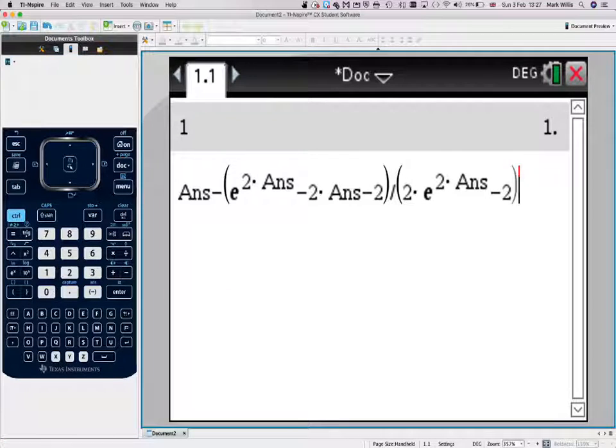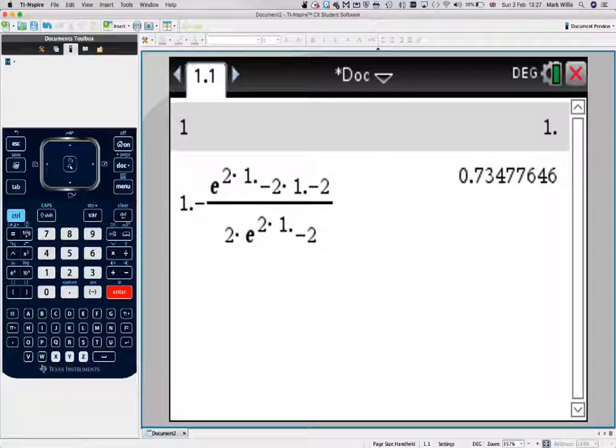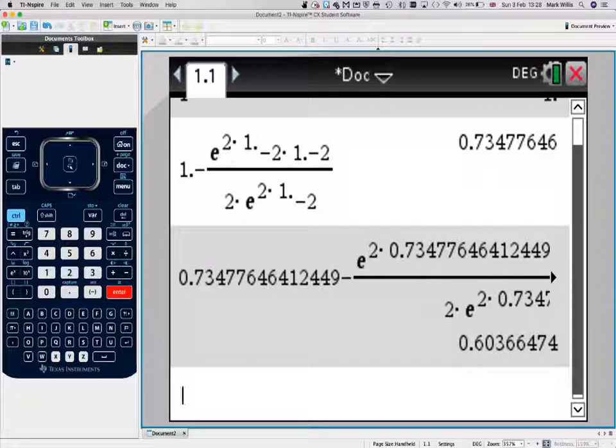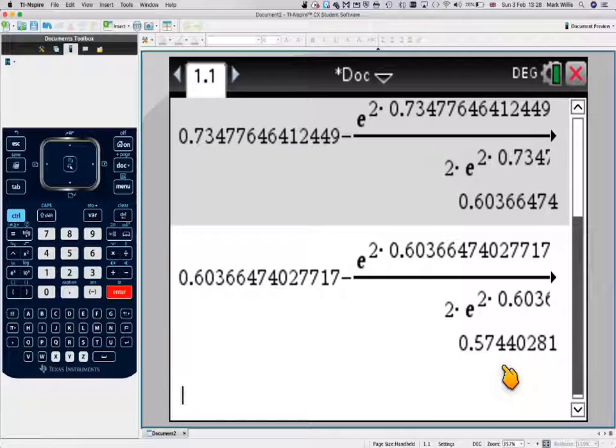And press enter. That will give us the first iteration. If we press enter again, we will get the second iteration. And if we press enter again, we will get the third iteration. So that's a quick way of doing it.